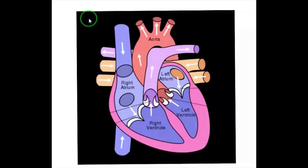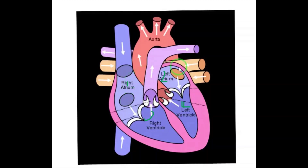Now let's see the structure of the human heart. The human heart is four-chambered — two auricles and two ventricles. The upper area contains the auricles and the lower area contains the ventricles.